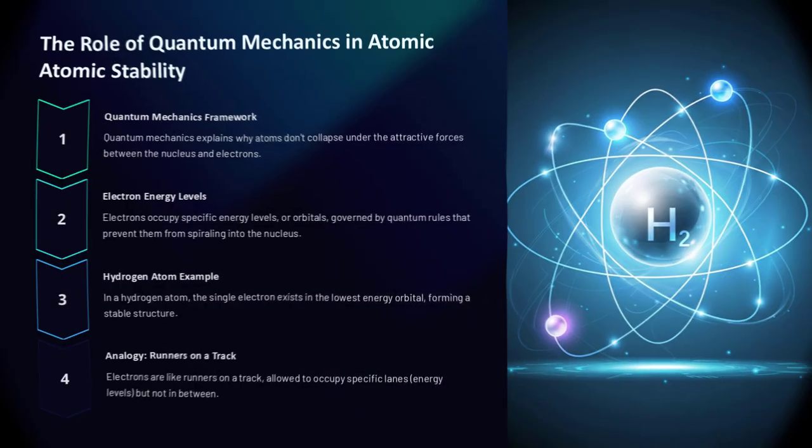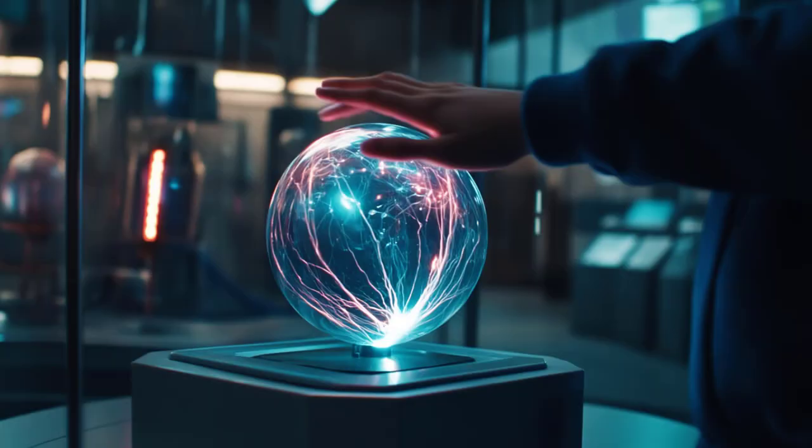Quantum mechanics provides the framework for understanding why atoms don't collapse under the attractive forces between the positively charged nucleus and negatively charged electrons. Electrons occupy specific energy levels, or orbitals, which are governed by quantum rules. These rules prevent electrons from spiraling into the nucleus, maintaining the stability of the atom.